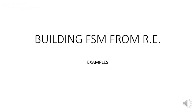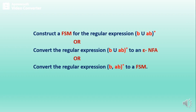I am going to explain an example related to building FSM from a regular expression. The first example is to construct an FSM for the regular expression B union AB whole star, which can also be asked as: convert the regular expression B union AB whole star to an epsilon NFA — that is, an NFA having epsilon transitions — or convert it to a FSM.